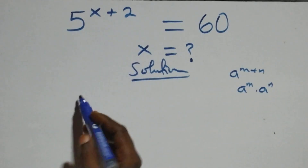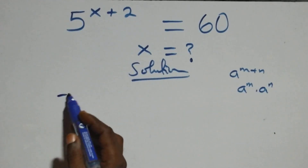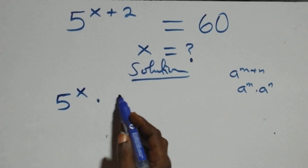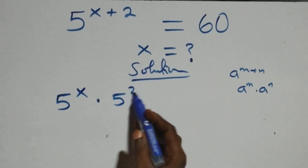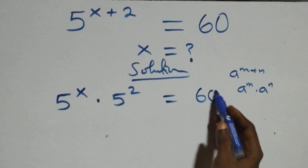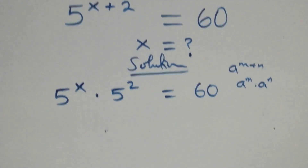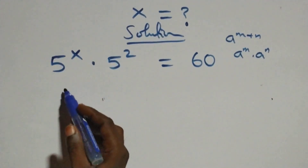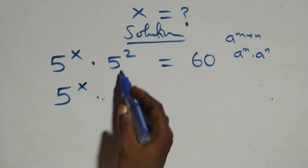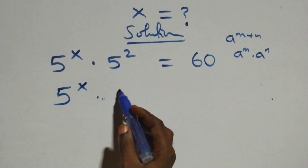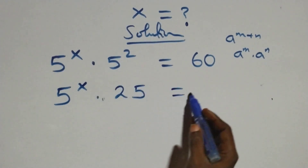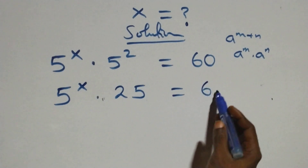It becomes 5 raised to power x times 5 squared, then equals to 60. We can write this as 5 raised to power x times 5 squared — 5 times 5, that's 25 — then equals to 60 on this side.